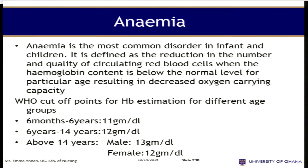So what is anemia? Anemia is the most common disorder in infants and children. It is defined as a reduction in the number and quality of circulatory red blood cells when the hemoglobin content is below the normal level for a particular age, resulting in decreased oxygen carrying capacity.